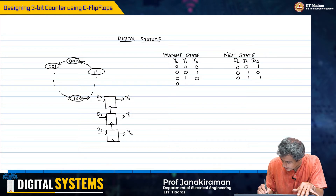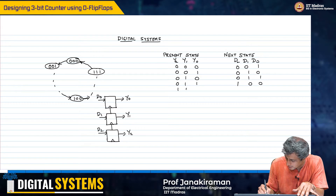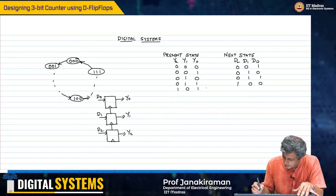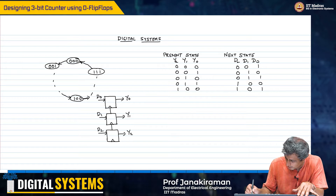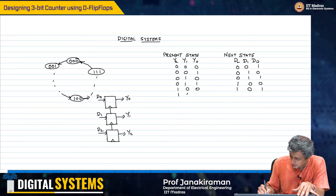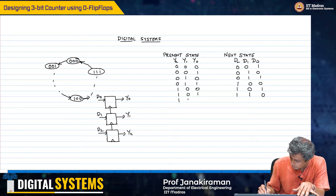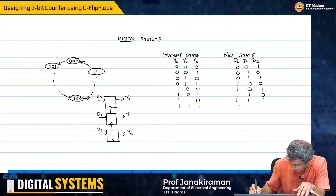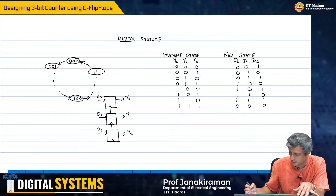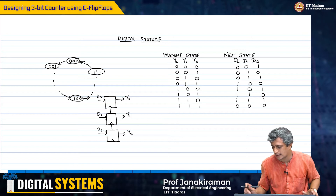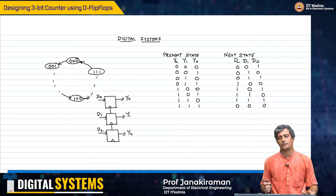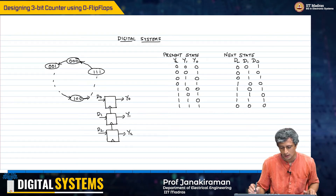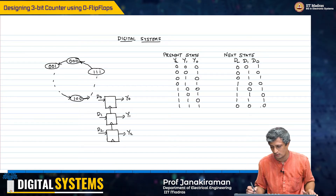Let us just focus on that: 1, 1, 1, 0, 0, 1, 0, 1, 0 — from 1, 0, 1, 0 I go to 1, 1, 1, then from 1, 1, 1 I go back to 0, 0, 0. This is my next state and we are now going to solve for d2, d1, and d0.